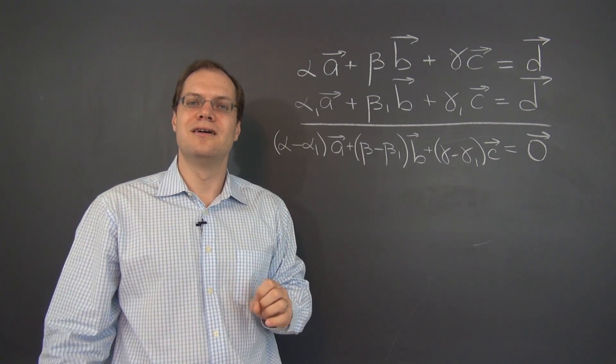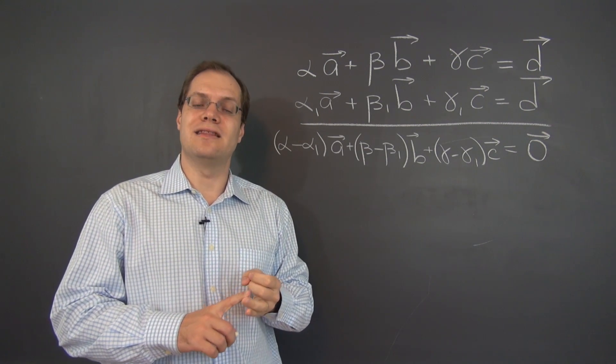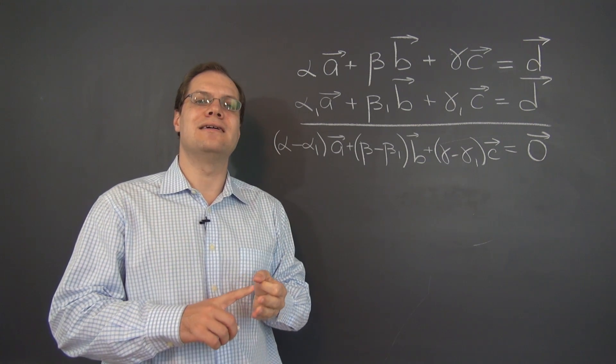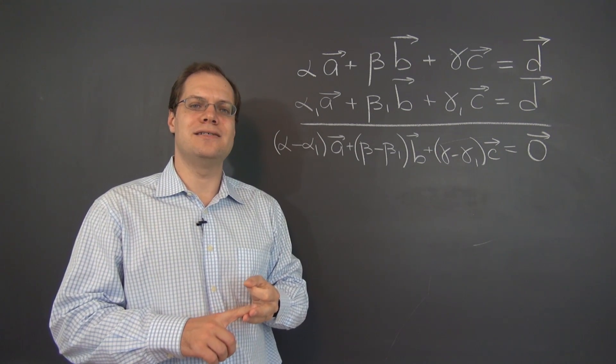So in conclusion, linear dependence implies lack of uniqueness while linear independence implies uniqueness.